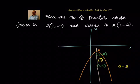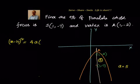Since the equation is going downwards, the standard form is: (x - h)² = -4a(y - k). We already know the vertex is at (1, -2), so h = 1 and k = -2.